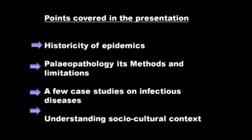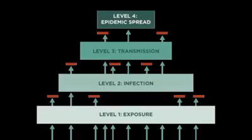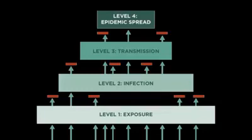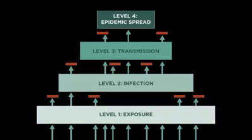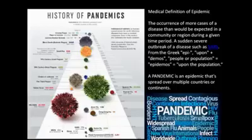To understand epidemic spread, first the human population gets exposure to different pathogens which can lead to infection, and then that infection is transmitted to different people. When it reaches the next level — where a large number of people are infected by one or more particular diseases — we call it an epidemic.